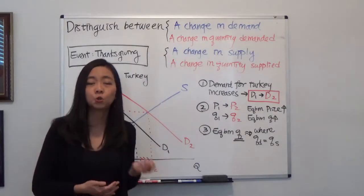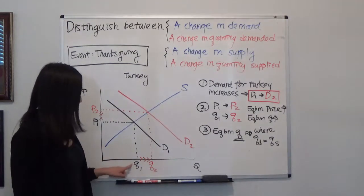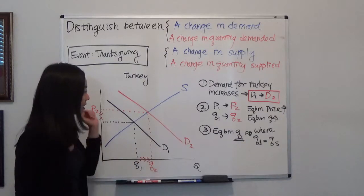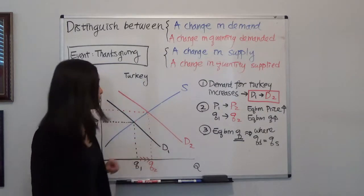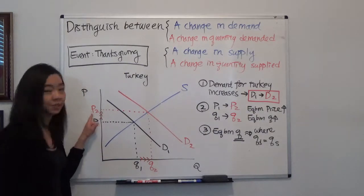you're going to see a new equilibrium price and quantity. So the original price was P1 and the original quantity was Q1. Now, after the demand has shifted to the right, you know you have a new price. The price goes up from P1 to P2.